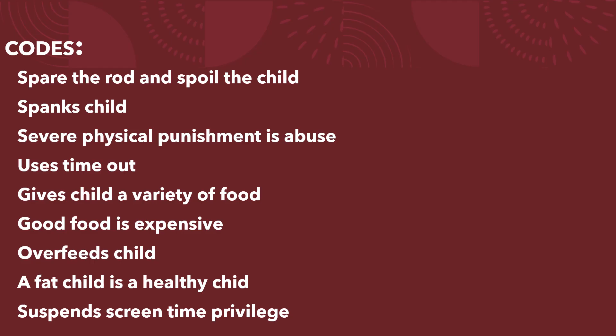Now let's see the list of codes. What I have here is a list of codes from a single interview only — in an actual research, you're going to have much, much more than this. But for illustration purposes, let's use this. The codes are: spare the rod and spoil the child, spanks child, severe physical punishment is abuse, uses timeout, gives child a variety of food, good food is expensive, overfeeds child, a fat child is a healthy child, and suspends screen time privilege.